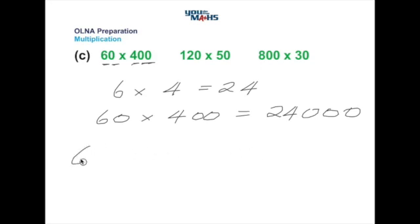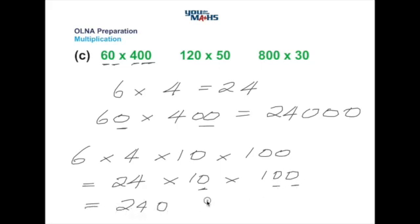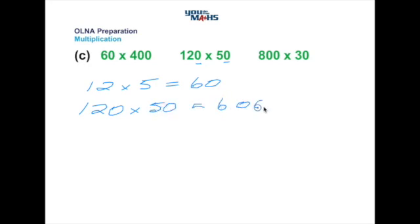Let's look at why that is. We can split 60 and 400 into 6 multiplied by 4, then 6 times 10 gives 60 and 4 times 100 gives 400. Six fours are 24, and we're still multiplying by 10 and 100, so our final result is 24 with one zero from multiplying by 10 and two zeros from multiplying by 100 — giving 24,000. In the next problem, 120 times 50: 12 multiplied by 5 is 60, with two extra zeros that gives 6,000.